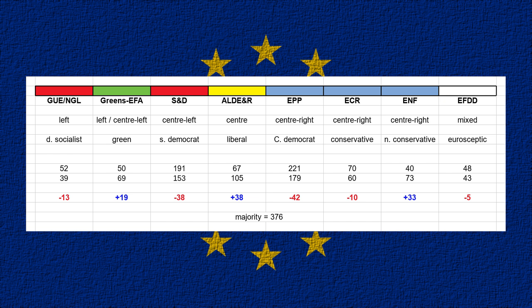The ECR is basically a breakaway faction of the EPP, founded by David Cameron and the Conservative Party, who wanted a group for Conservative parties less supportive of European integration. The ENF was founded by Marine Le Pen and Geert Wilders. These parties are mostly national conservative, different to EPP and ECR in that they talk a lot about immigration, national sovereignty, national culture and identity. The EPP, ECR and ENF are all essentially centre-right — pro-business, not keen on major economic intervention.